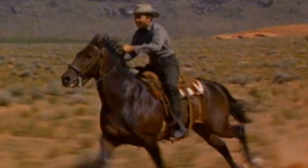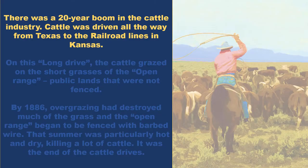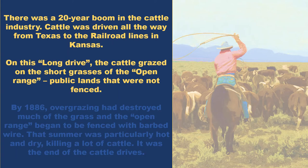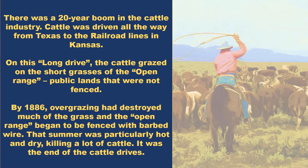The cattle kingdom. There was a 20-year boom in the cattle industry. Cattle was driven all the way from Texas to the railroad lines in Kansas. On this long drive, the cattle grazed on the short grasses of the open range — public lands that were not fenced. By 1886, overgrazing had destroyed much of the grass and the open range began to be fenced with barbed wire. That summer was particularly hot and dry, killing a lot of cattle. It was the end of the cattle drives and the end of the boom.